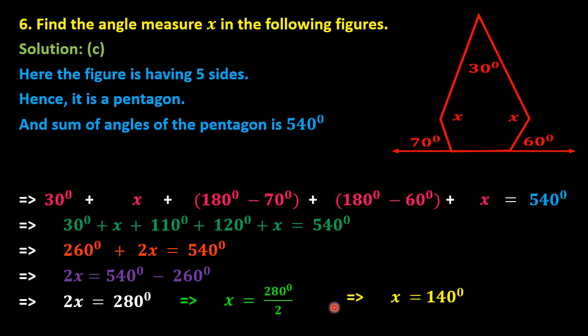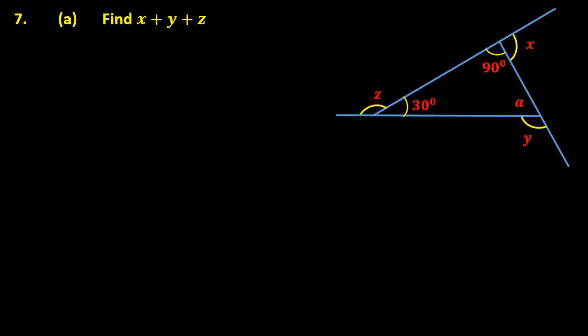So the value of x is 140 degrees. Now let me do question number 7e, where we need to find x plus y plus z. In this figure, x, y, and z are three exterior angles, and two interior angles are given: 90 degrees and 30 degrees.